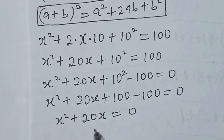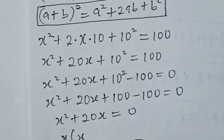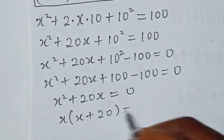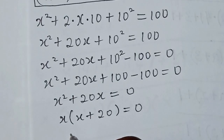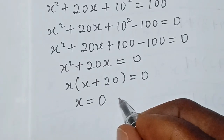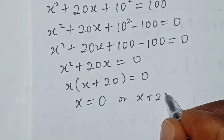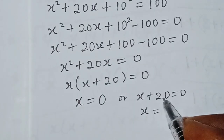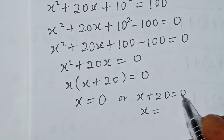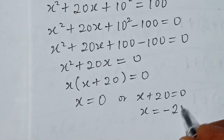Now we solve for x. We factorize: x is common, giving x(x + 20) = 0. So the value of x is either x = 0, or x + 20 = 0, which means subtracting 20 from both sides gives x = −20.